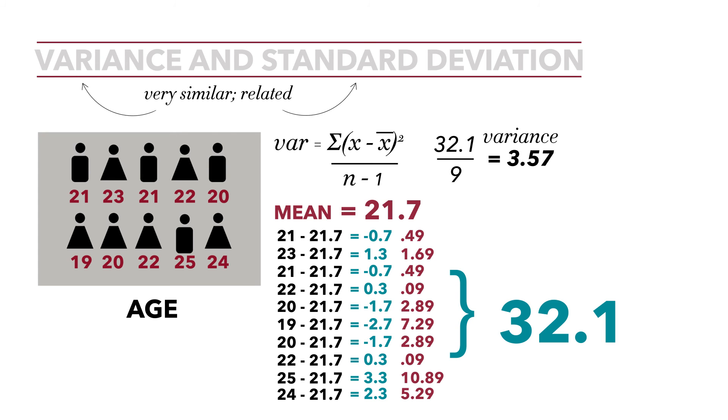We've calculated our variance as 3.57. Well, most of us do not think in terms of squared differences. We think of average distance or average difference. To get rid of the square, we calculate the standard deviation, which is just the square root of the variance. Our variance is 3.57. To calculate the standard deviation, we just calculate the square root of 3.57, which is 1.89. So our standard deviation is 1.89. That represents the average distance from the mean, the average difference from the mean.